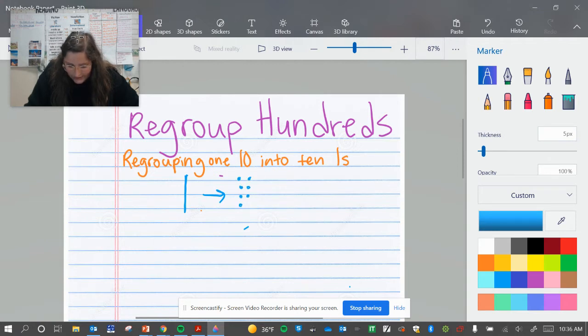5, 6, 7, 8, 9, 10. So when we regroup a 10 into 10 ones, it's because we don't have enough ones to subtract, right?